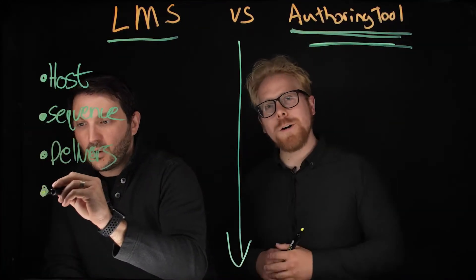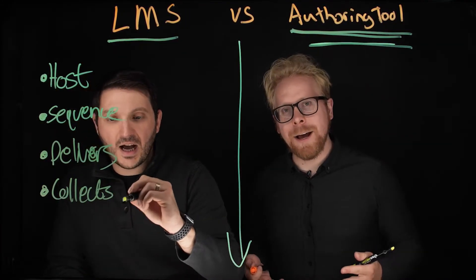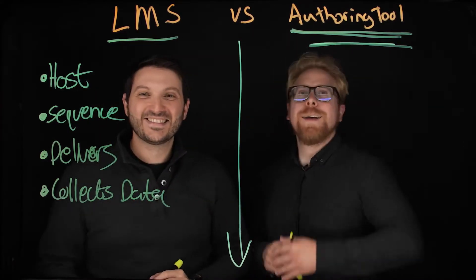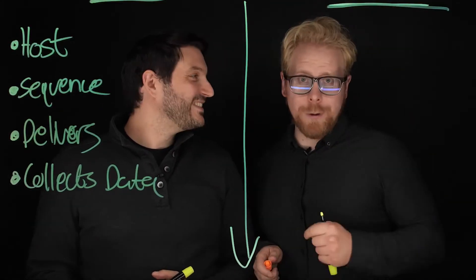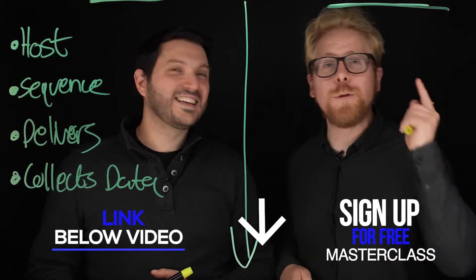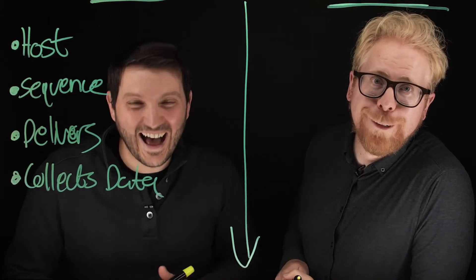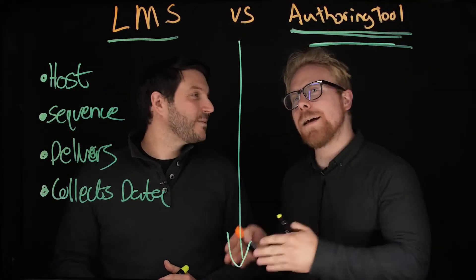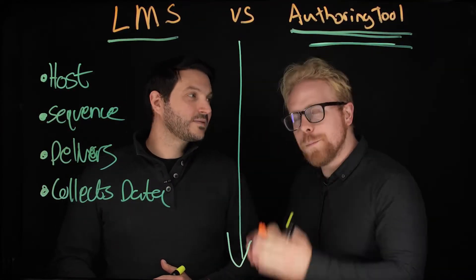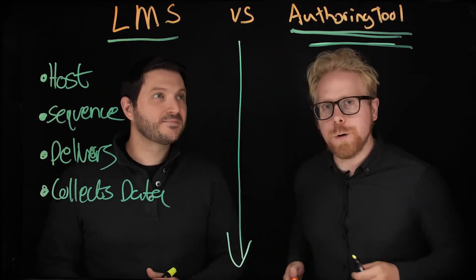The fourth thing an LMS does is it collects data. For example, you want to know if your learners are completing your program — that's the type of data we're talking about. You want to know if your learners are completing your program. That's what an LMS does.